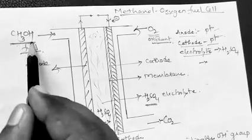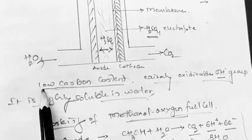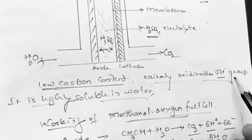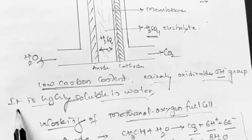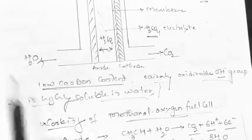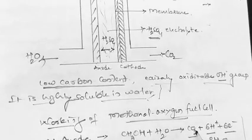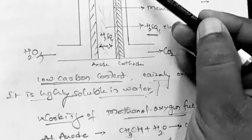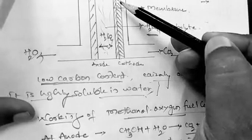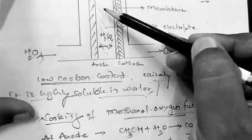We are using methanol as a fuel because it has good properties: it has low carbon content, it contains an easily oxidizable group, and it is highly soluble in water. Oxygen is continuously supplied at the cathode, and methanol along with sulfuric acid is supplied at the anode through the anodic compartment, enabling a continuous reaction.